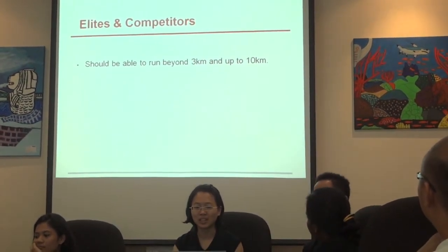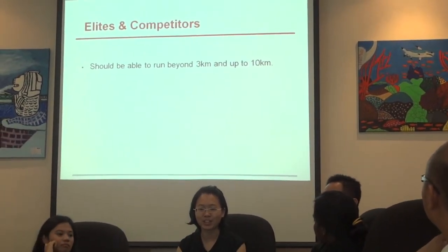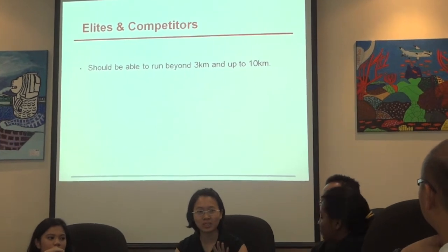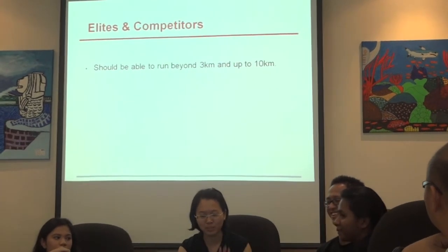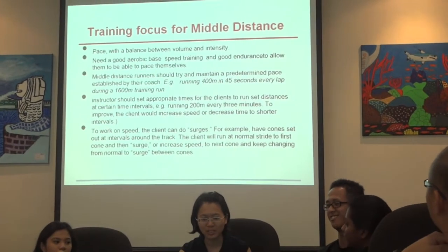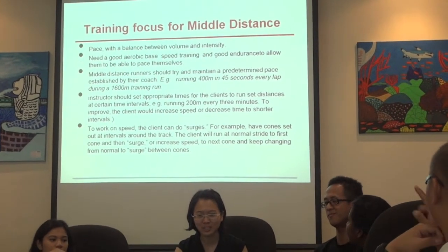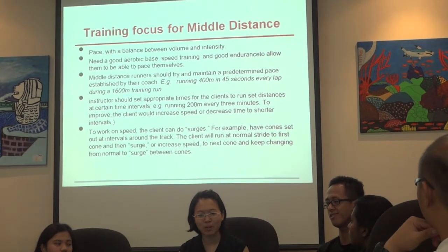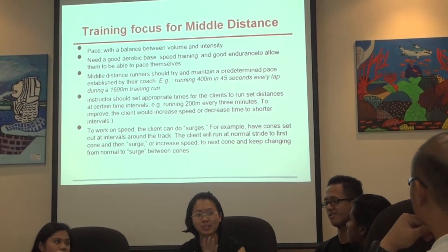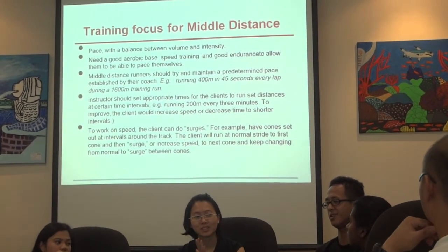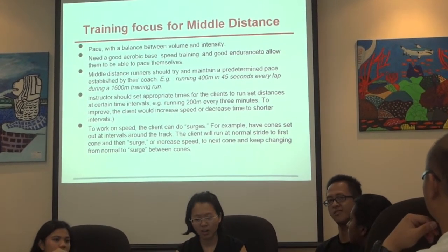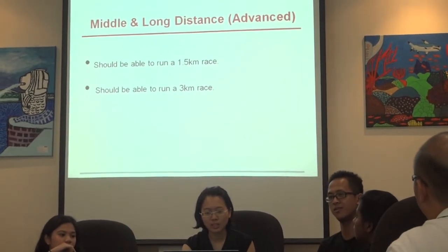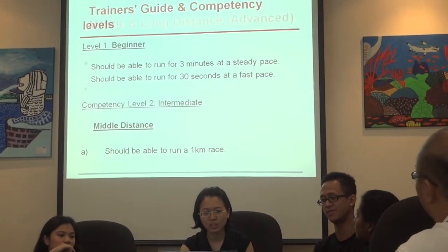Allies and competitors should be able to run beyond 3 km. For allies and competitors, you could be using the blocks and pedals. So the blocks are only for that level — if they want to enter a competition, then they will need it. For beginners, those are all stand-up starts; the stand-up way is for training.